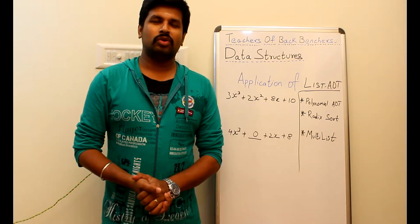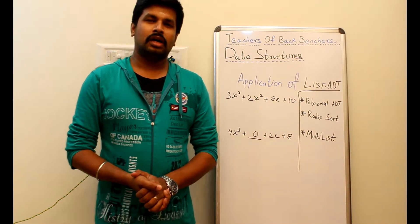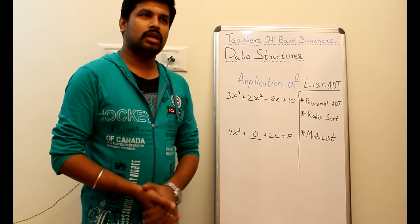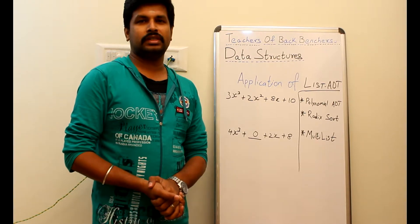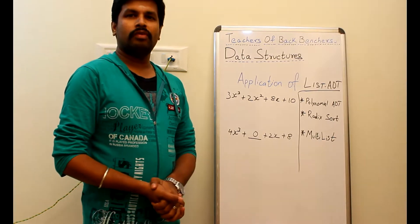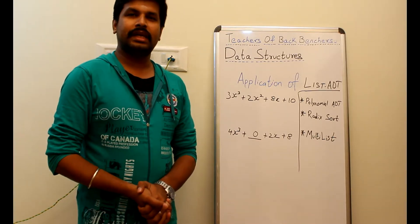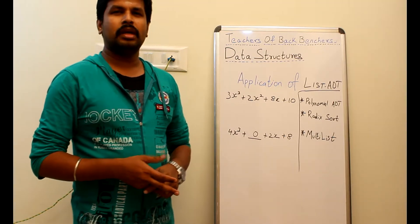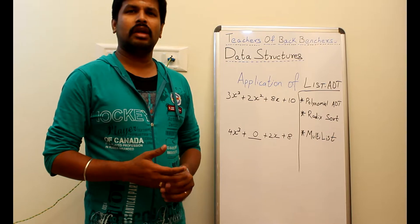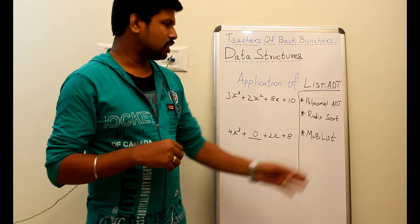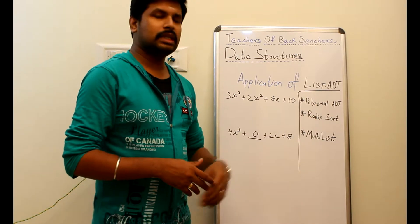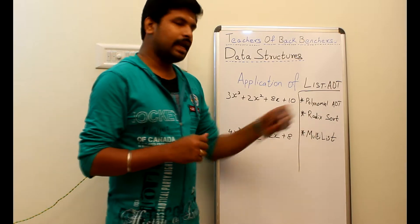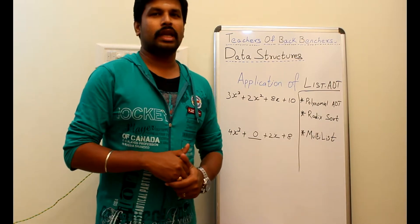Welcome to the 10th tutorial of data structures. In this tutorial we are going to see the applications of list ADT. So far in the previous tutorials we have seen the process and operations of list ADT. The concepts of list ADT have been implemented in several topics and areas. For example, we will look at three topics — the first is polynomial ADT. So list ADT's first application is polynomial ADT; we can see radix sort in the next tutorial.